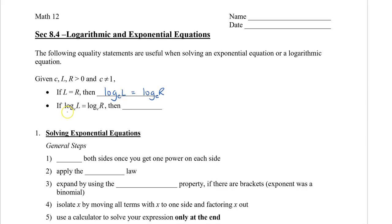Next, if we have two log expressions that are equal — such as log L equals log R, both with a base of C — then we can remove the logs and say that L is equal to R. We're not dividing by log; log is not a number. We're stating that since both expressions have a base of C, the expressions being logged should be the same as well.